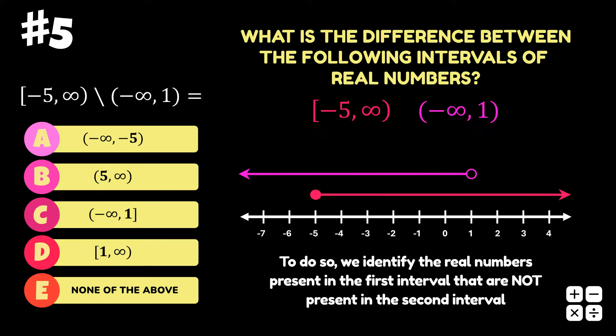We can see that the infinitely many real numbers greater than 1 are present in the first interval and not in the second, and so we create a new interval with these numbers included, as shown here.